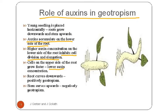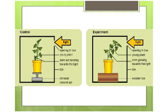You can see the phototropism experiment: in the control, light enters the opening in the box but the clinostat is wound up so the stem does not bend towards light. In the experiment, the opening in the box means the young plant stem grows towards the light.